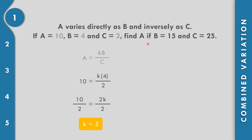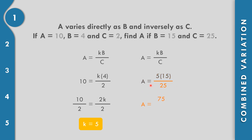Now find a when b equals 15 and c equals 25, with k equals 5. Substituting: a equals 5 times 15 over 25. Multiplying, 5 times 15 equals 75, then 75 divided by 25 equals 3. So, the value of a is equal to 3.